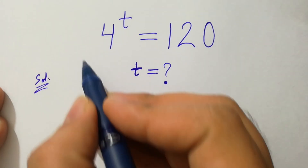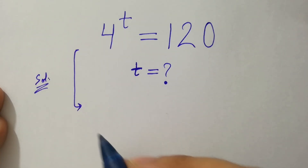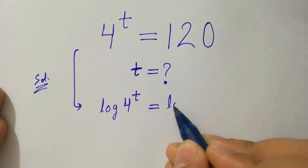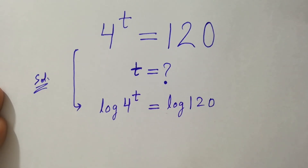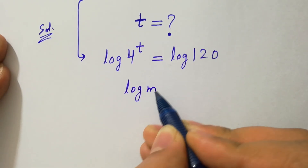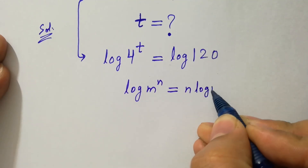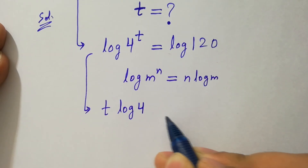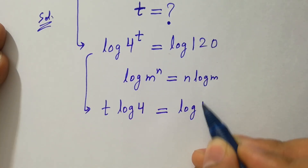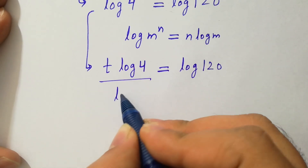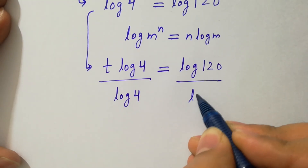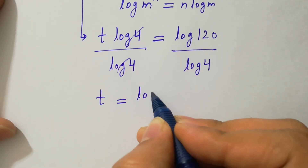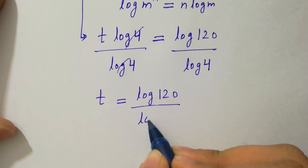To solve this problem, take log on both sides: log 4 to the power t equals log 120. As we know, log m to the power n equals n log m, we have t log 4 equals log 120. Dividing by log 4 on both sides, log 4 cancels, so t equals log 120 over log 4.